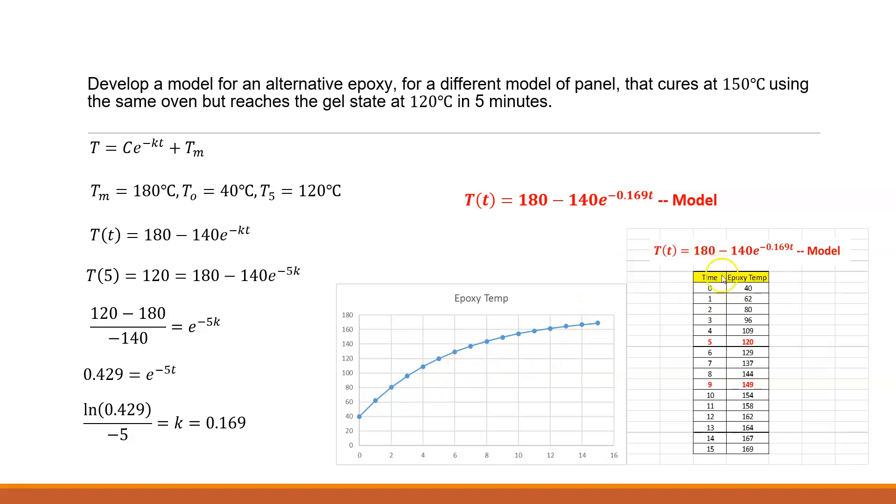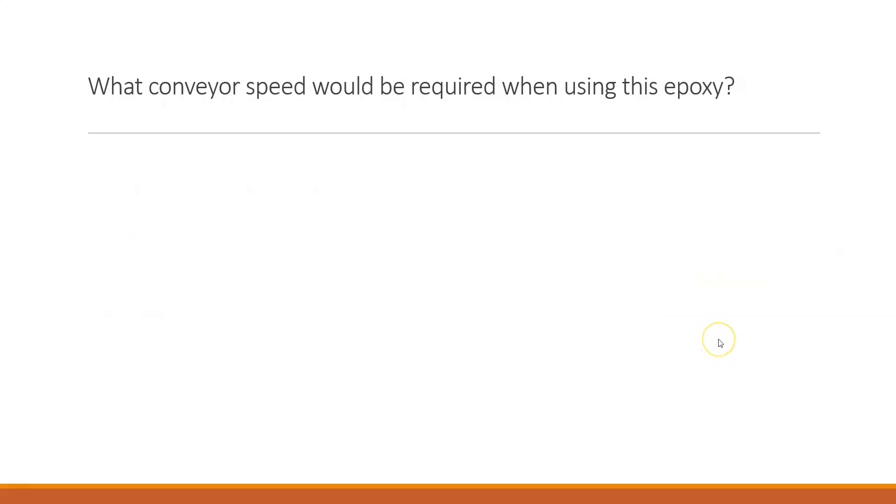And this is what this new model, if we were to graph it for different types of time going across the x-axis, we can start to see when that epoxy is going to reach its final cure temperature. For an input, we've got an output, and this is going to 150 degrees. So what we can see, it's going to be about nine minutes, a little over nine minutes, 9.12 minutes to reach 150 degrees. And it also has to travel the same distance of five meters in the 180 degree oven. And it comes up to 0.55 meters per minute.